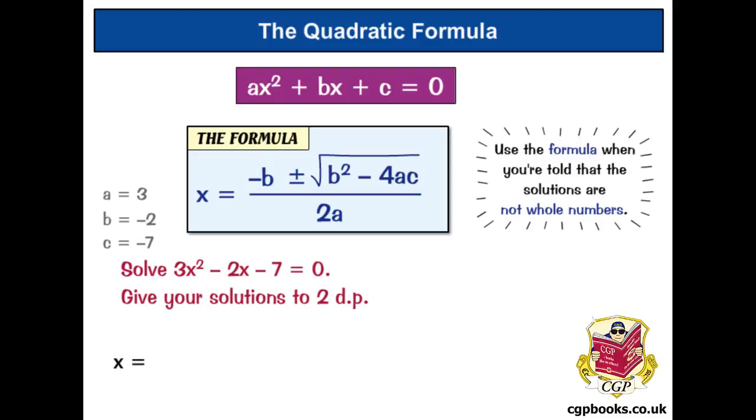Alright, now into the formula. X equals minus B. So, we've got minus minus 2, which is plus 2. Then, plus or minus the square root of b squared, so that's minus 2 squared, minus 4AC, so that's 4 times A, which is 3, times C, which is minus 7. All over 2A, so that's 2 times 3.